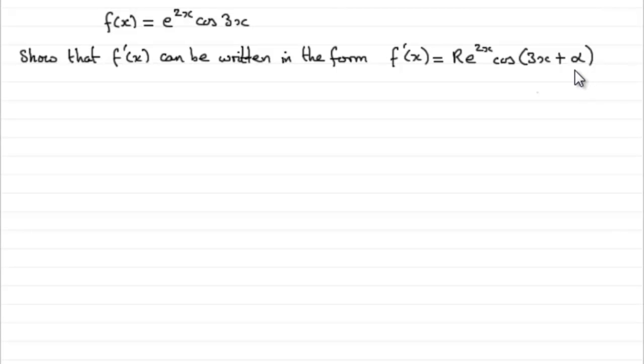So how are we going to do this? Well, f dash x is the first differential of f of x with respect to x, so we need to differentiate this with respect to x. And what we have are essentially two functions of x being multiplied together, so we're going to need to use the product rule.